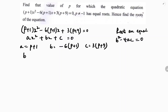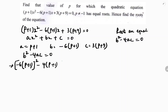Substituting into the formula b² - 4ac = 0: [-6(p+1)]² - 4·(p+1)·3(p+9) = 0.